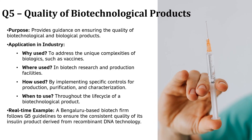ICH Q5, Quality of Biotechnological Products, focuses on ensuring the quality, safety and consistency of biotech and biological products like vaccines, insulin and monoclonal antibodies. Unlike traditional chemical drugs, biologics are made from living cells, making them more complex and sensitive. Even a small change in production can affect efficacy and safety, which is why strict guidelines are needed. For example, a Bangalore-based biotech company produces insulin using recombinant DNA technology. Since insulin is a biologic, it must follow strict ICH Q5 guidelines to ensure every batch has the same potency and purity, making it safe for diabetic patients worldwide. Without ICH Q5, there would be no clear standards for biotech drugs.